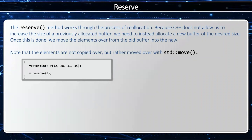The reserve method works through the process of reallocation. Because C++ does not allow us to increase the size of a previously allocated buffer, we need to instead allocate a new buffer of the desired size. Once this is done, we move the elements over from the old buffer to the new. Notice the elements are not copied over, but rather moved with std::move.